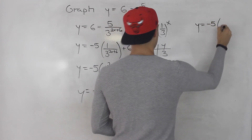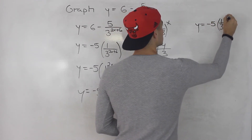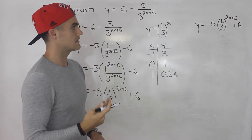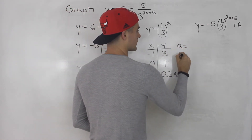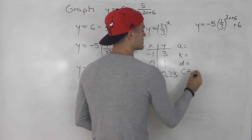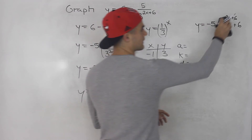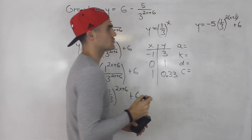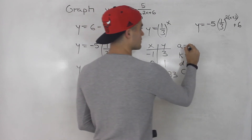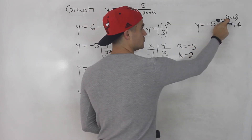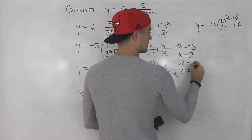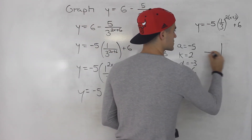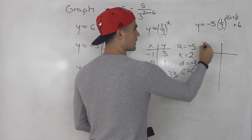Writing out the full function — negative 5 times (1/3)^(2x+6) plus 6 — we can identify a = −5, k = 2, d = −3, and c = 6. Before reading off those values, we factor the exponent: 2x + 6 becomes 2(x + 3), so d is the opposite sign of +3, giving d = −3.